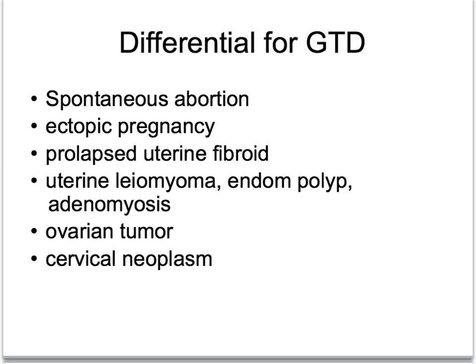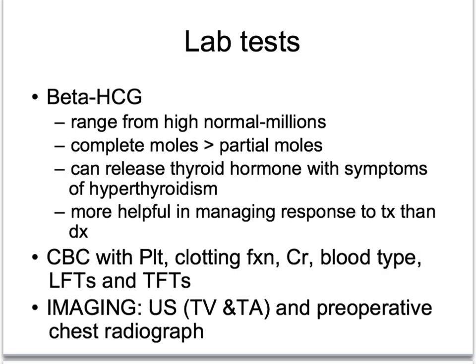For diagnostic lab tests, beta-HCG is going to be one of the best indicators. It can range from a high normal up to over a million international units. If this is paired with an enlarged uterus and vaginal bleeding, it would highly suggest a diagnosis of hydatidiform mole. Complete moles will more often have a higher beta-HCG level than partial moles. With an increase in beta-HCG, there can be increased thyroid hormone due to cross-reactivity, resulting in symptoms of hyperthyroidism. Getting a CBC with platelets and clotting function labs are important to rule out other pathology related to clotting.